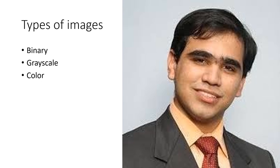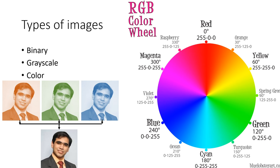The third type of image is color image. A color image is a digital image that includes color information for each picture element. Generally, color images can be considered as three grayscale images in red, green, and blue added together. The three colors — red, green, and blue — are chosen because they are primary colors and can be added to make any other color. The RGB color circle indicates the same.